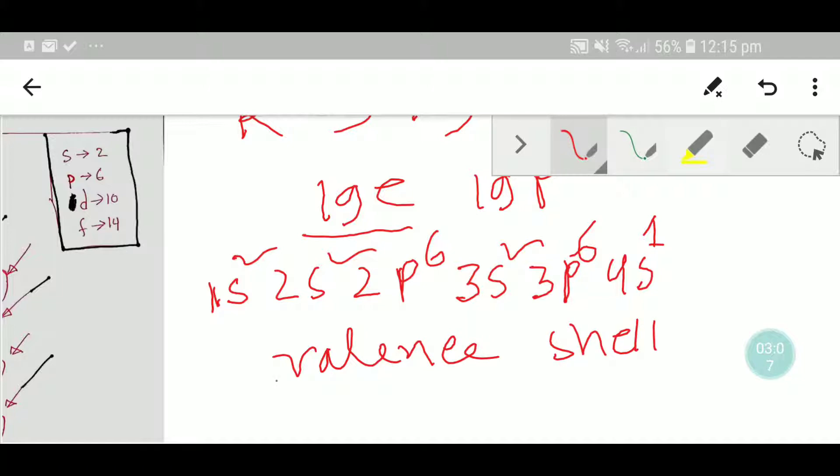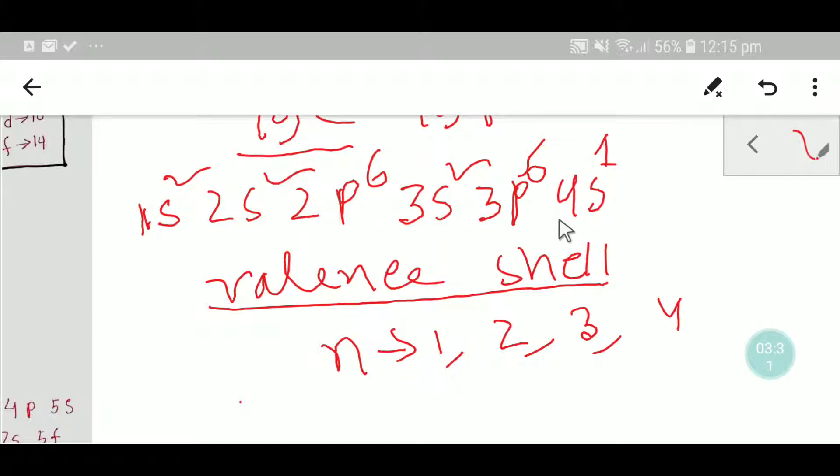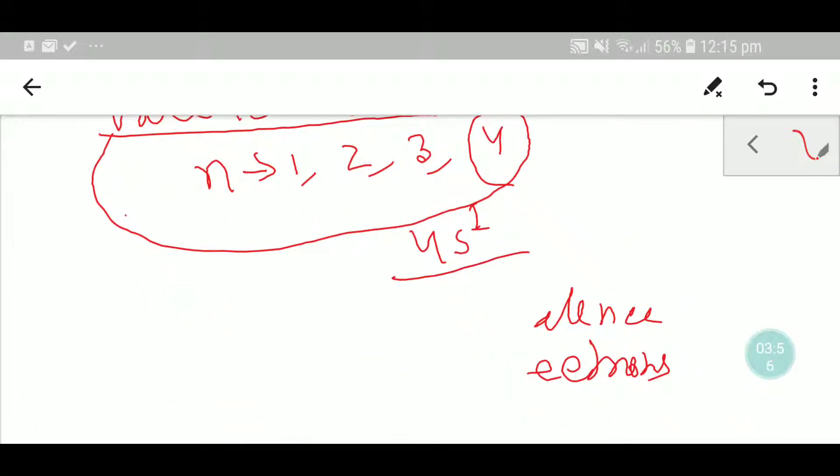How can you find the valency shell? To find the valency shell, you have to choose the principal quantum number. Here the principal quantum numbers are 1, 2, 3, 4. You have to consider the highest value of the principal quantum number. So here the highest value is 4. For n equals 4, we have 4s1. So this is the valency shell.